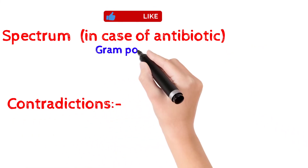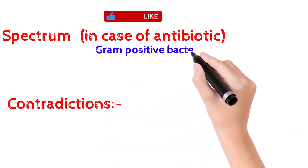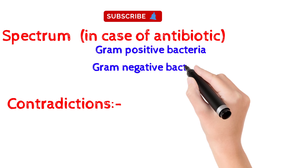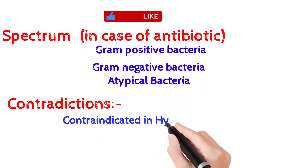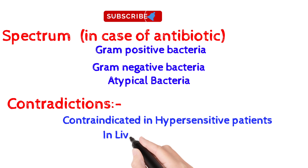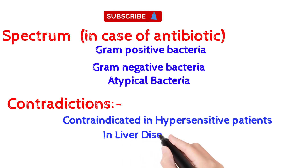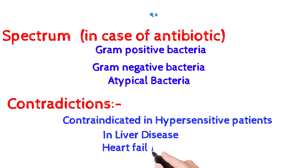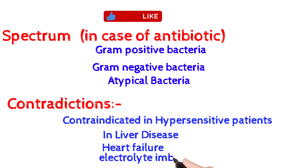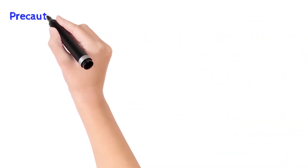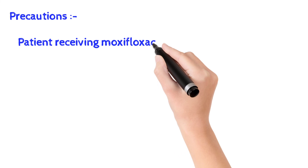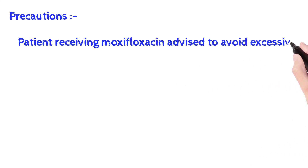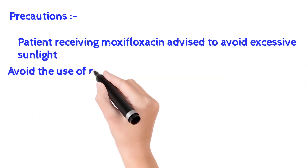The spectrum covers gram-positive bacteria, gram-negative bacteria, and atypical bacteria. Contraindications include hypersensitivity patients, liver disease, heart failure, and electrolyte imbalance. Regarding precautions, patients receiving moxifloxacin are advised to avoid excessive sunlight.